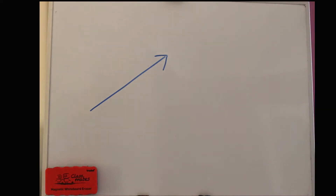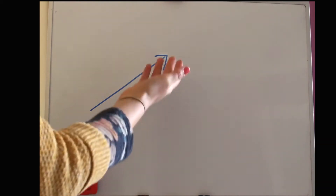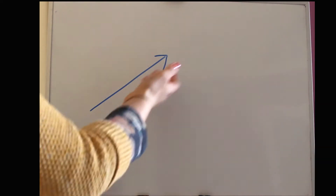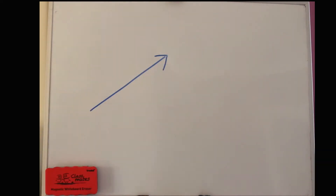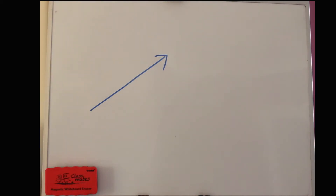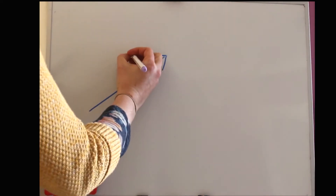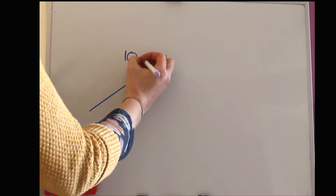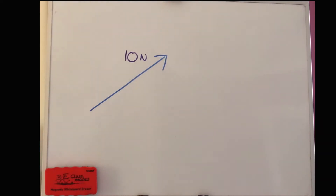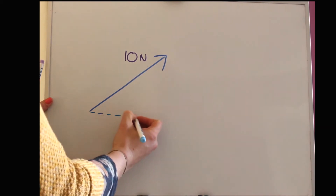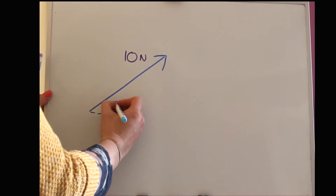We'll begin today with considering a single force. A force is a vector and it's represented here with a blue arrow. A vector has a direction and a magnitude, so we can draw a force using an arrow. Let's say that this force has a magnitude of 10 newtons — that's the size of that force — and we'll say the direction is an angle from the horizontal, let's say 50 degrees.